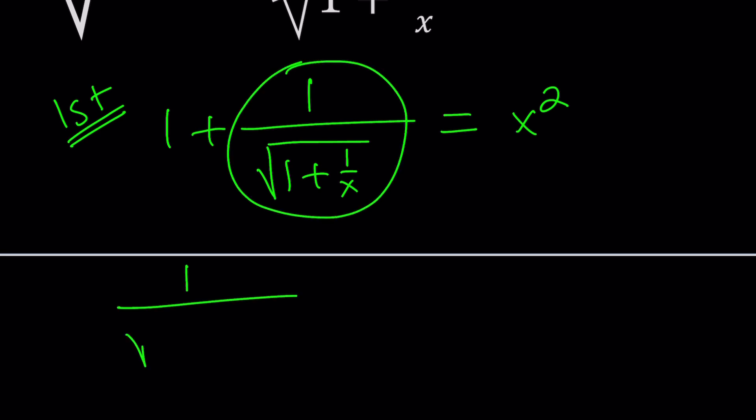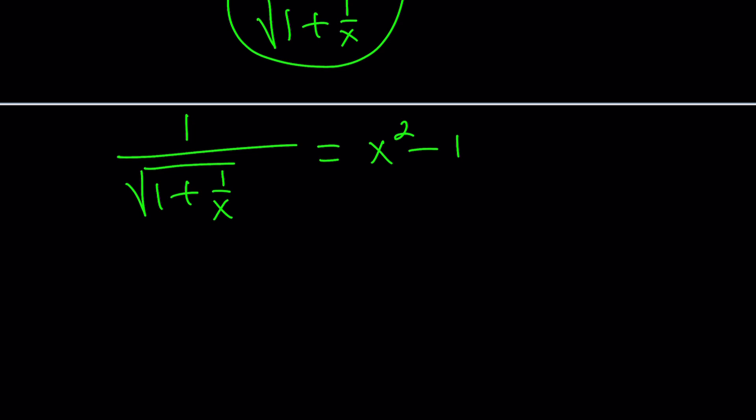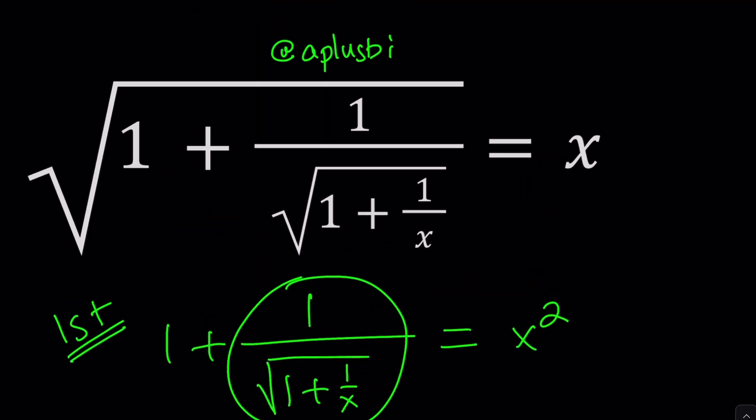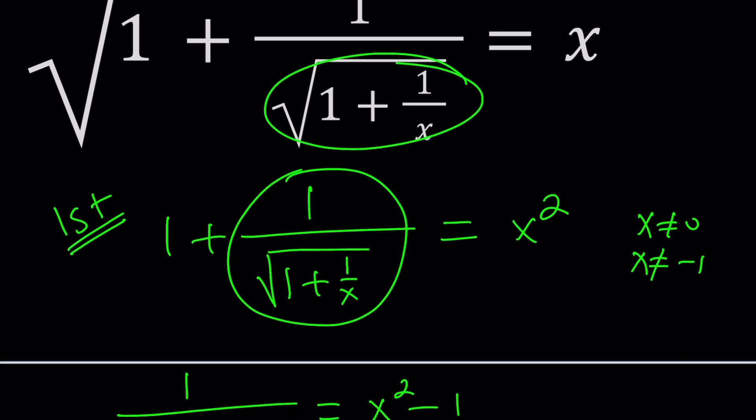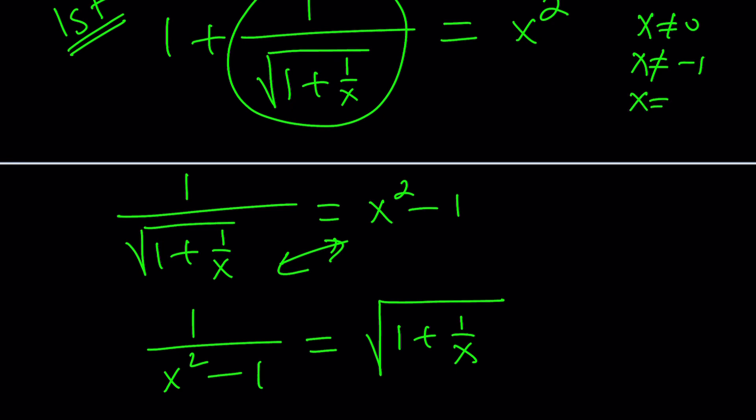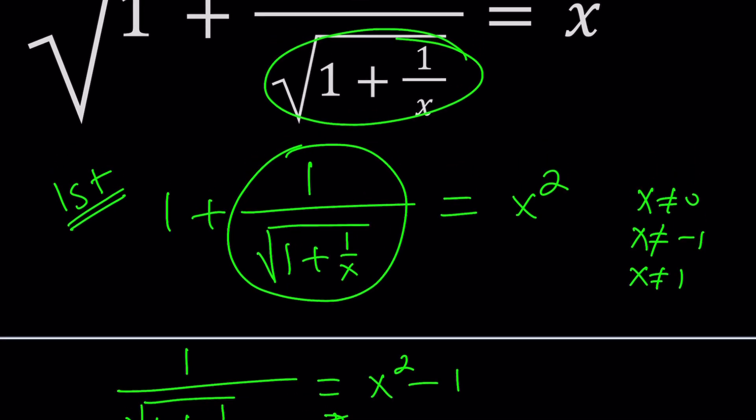Let's go ahead and isolate this as much as possible. Subtract one, that'll give me x squared minus one. Then notice that these can be interchanged because they're being multiplied. In other words, we can write this as 1 over x squared minus one equals the square root of 1 plus 1 over x. You have to be careful here. X should not be zero. I guess that was the very first requirement. X cannot be negative one because that would make this zero. And then x should not equal what else? X should not be one either because notice that we ended up with x squared minus one. What would happen if x was one in the very original equation?